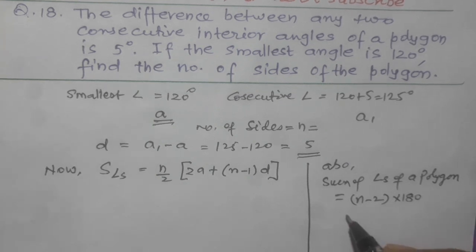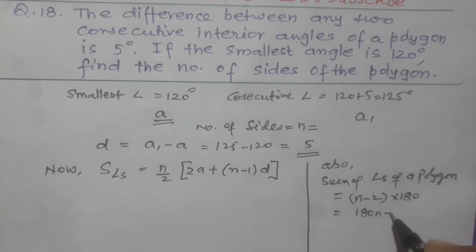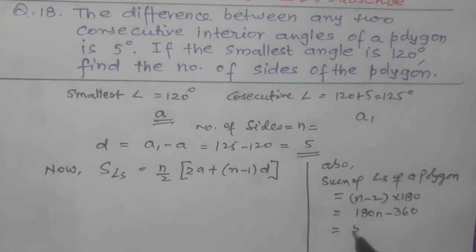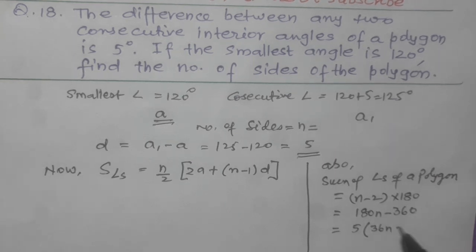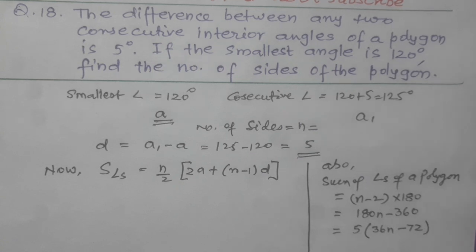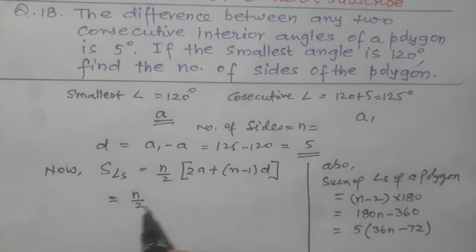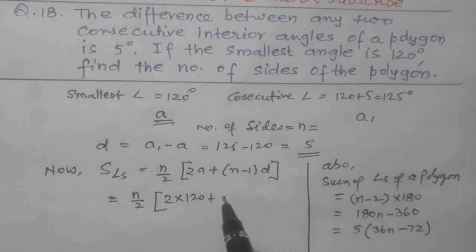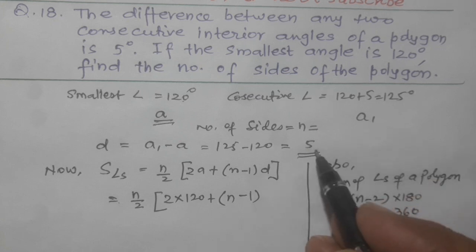So this is the formula, and if we simplify it, it will be 180N minus 360. If we take 5 common, it will be 36N minus 72. Come to this side, N by 2 will be 2 into A is 120 plus N we have to find, minus 1, and D equals 5.